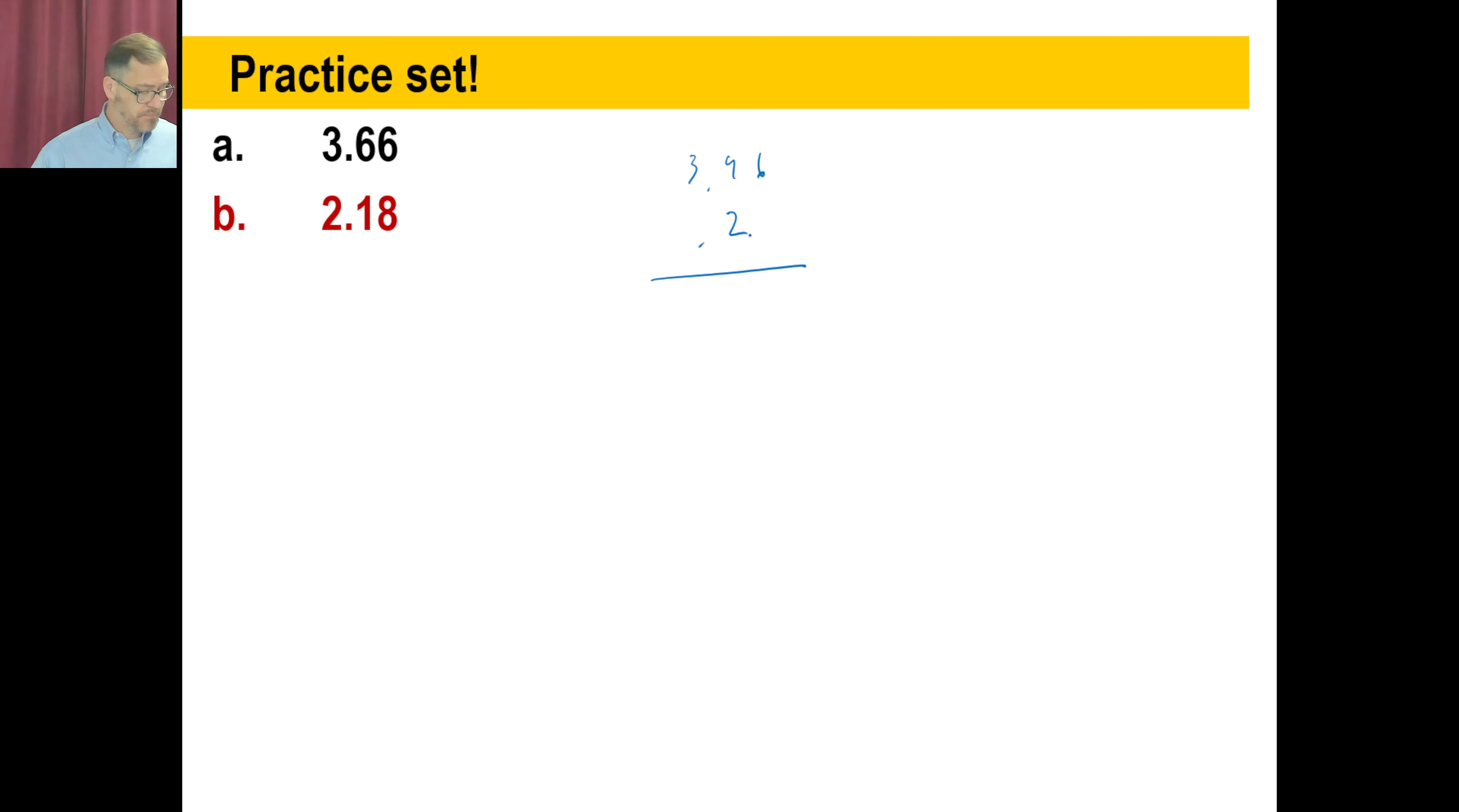That's 2.18. Pause it and try C. All right. 0.945. Make sure you line those up. You don't need the zero if you don't want to. Pause it and try D.